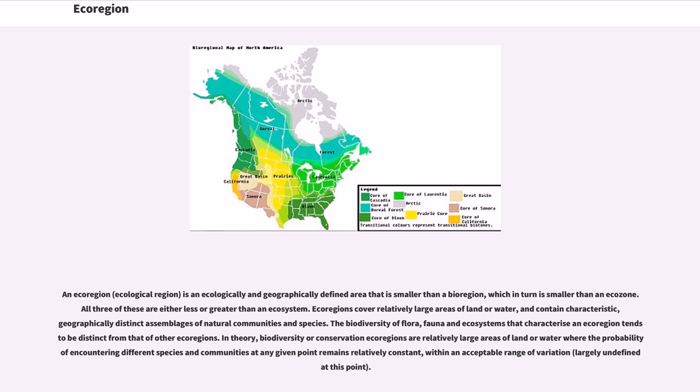Ecoregion. An ecoregion is an ecologically and geographically defined area that is smaller than a bioregion, which in turn is smaller than an ecozone. All three of these are either less or greater than an ecosystem. Ecoregions cover relatively large areas of land or water and contain characteristic, geographically distinct assemblages of natural communities and species. The biodiversity of flora, fauna and ecosystems that characterize an ecoregion tends to be distinct from that of other ecoregions.